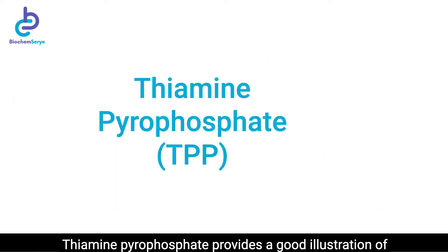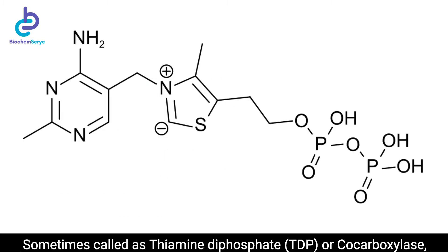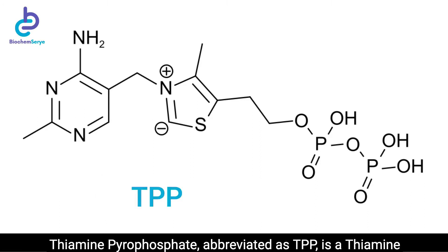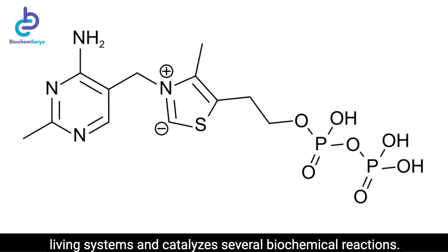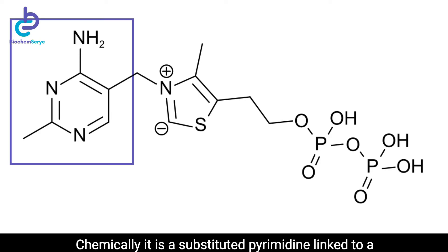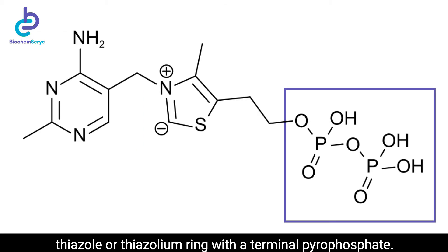Thiamine pyrophosphate provides a good illustration of the manner in which coenzymes participate in catalysis. Sometimes called thiamine diphosphate or cocarboxylase, thiamine pyrophosphate, abbreviated as TPP, is a thiamine or vitamin B1 derivative that is a coenzyme present in all living systems and catalyzes several biochemical reactions. Chemically, it is a substituted pyrimidine linked to a thiazole or thiazolium ring with a terminal pyrophosphate.